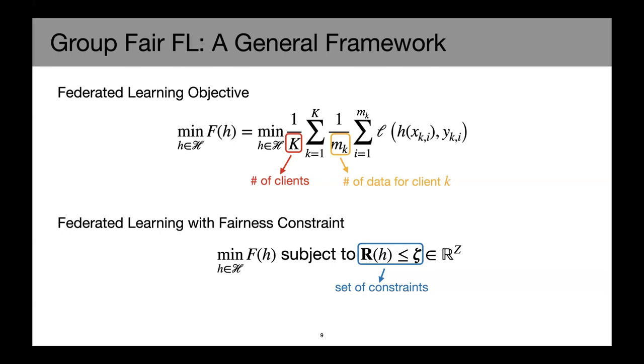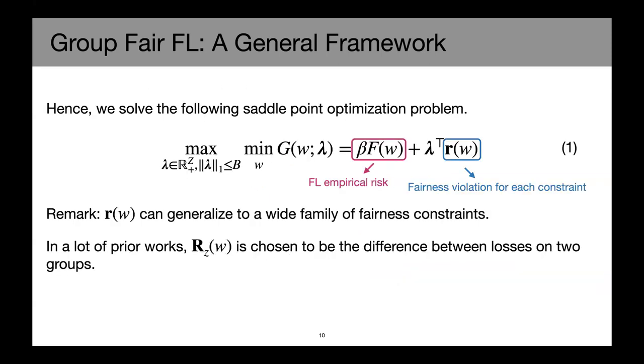Here, this capital RH is some statistics on the dataset and on the model. Zeta is prefixed to be some constant and this capital Z is the number of fairness constraints we want to encode to be satisfied by our solver.